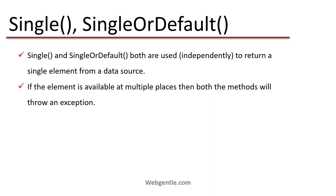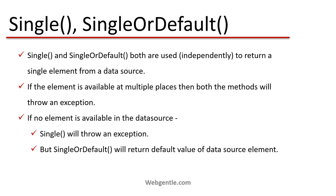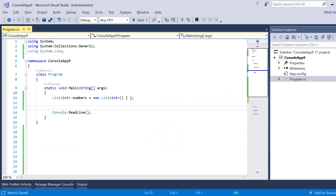The difference between Single and SingleOrDefault: if you are looking for a unique element and it exists, Single will return that element. If it does not exist, Single will throw an exception. With SingleOrDefault, if the element exists it returns that element; if it does not exist, it returns the default value of the data type.